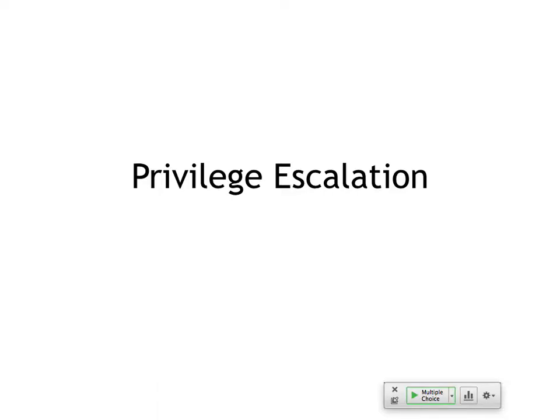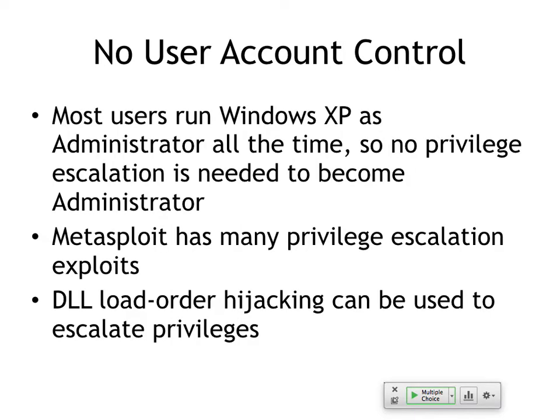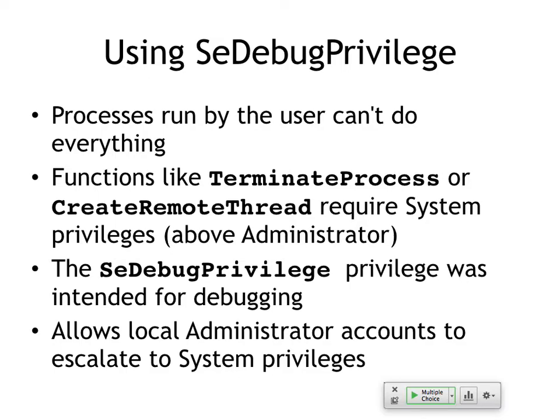Privilege escalation is a huge issue. If you're a limited user, you want to be administrator; if you're an administrator, you want to be system. Metasploit has all these attacks to try to elevate to system, and sometimes they work and sometimes they don't. To do things like steal password hashes, you've got to elevate to system. On XP it was really easy because there was no user account control, so everybody ran as administrator all the time, and you could easily escalate by injecting a DLL into a process. But now we have user account control, and processes like terminate process and create remote thread require system privileges — the SE debug privilege gives you that.